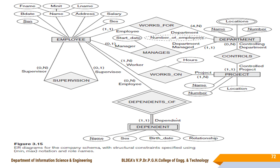For structural constraints: in WORKS_FOR, the employee side has (1,1) — minimum 1 means the employee must work for at least one department, and maximum 1 means they can work for only one department, indicating total participation. The department side has (4,N) — minimum 4 employees per department and maximum N, meaning any number of employees can work for the same department, and minimum 1 indicates total participation.